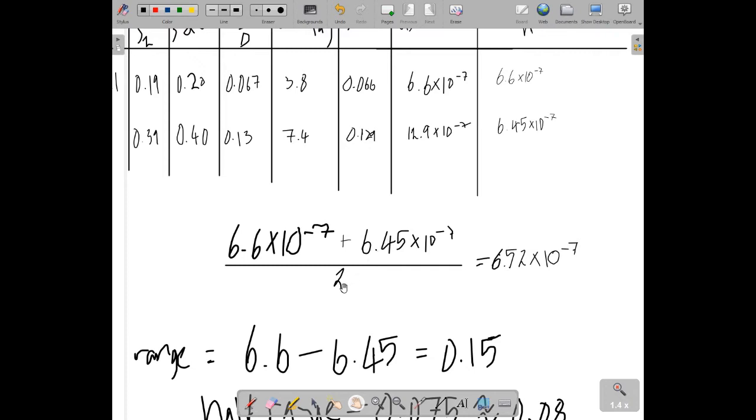I add them together and divide by 2 to calculate the mean. Obviously, if I had 5 readings or 6 readings, then I can add them all together and get a mean for all of the results. But in this case, I get 6.52 times 10 to the minus 7 for my mean result.